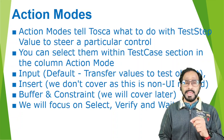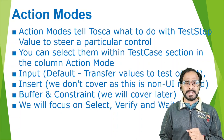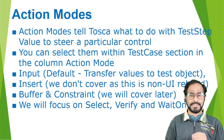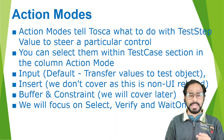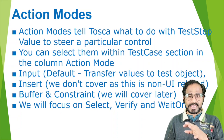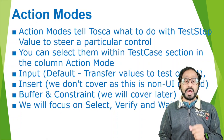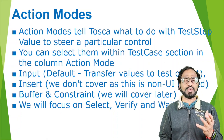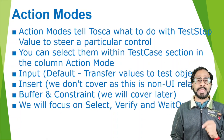There are different action modes: input, insert, buffer, constraint, select, verify, and wait on. Input is the default action mode provided by Tosca — it transfers values to a test object. In my previous sessions, to click on a particular control or to enter text in an edit box, we used an action mode called input. That's the default action mode that transfers values to a test object.